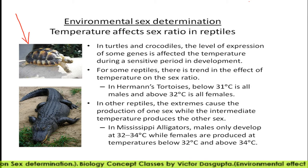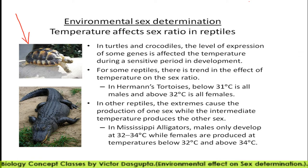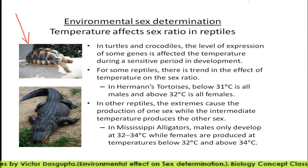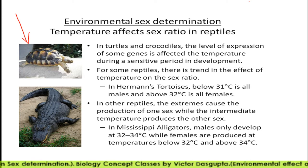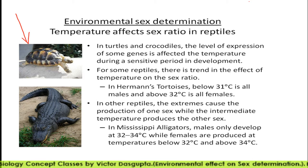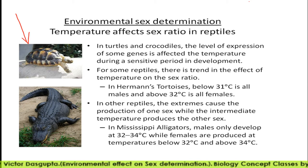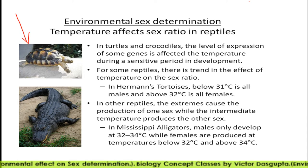In case of some turtles and crocodiles, that means in reptiles, temperature determines the sex ratios during the incubation period. For example, in Harman.os, below 31 degrees centigrade all will be males, and if the incubation temperature is above 32 degrees centigrade all will be female. In other reptiles, extreme temperatures produce one sex while intermediate temperature produces the other sex. Mississippi alligators: males only develop at 32 to 34 degrees, while females are produced at temperatures below 32 and above 34 degrees centigrade.